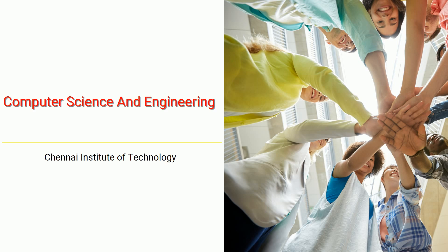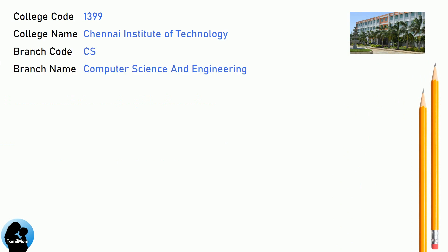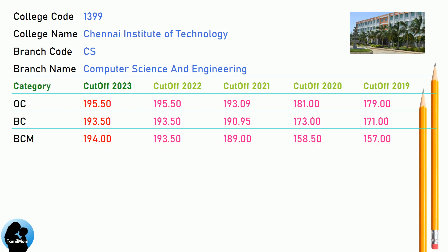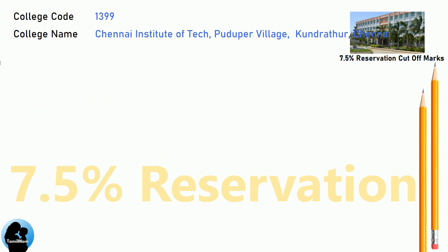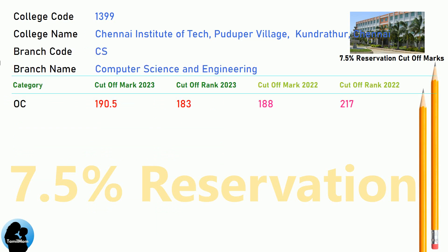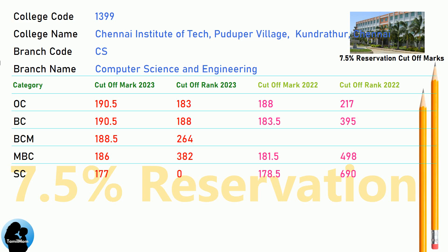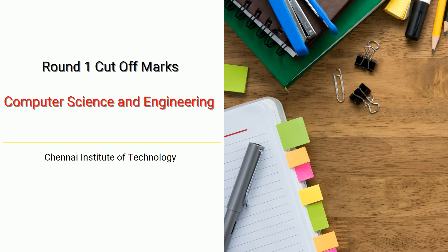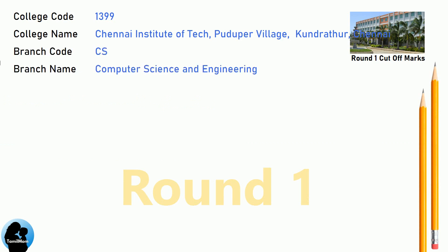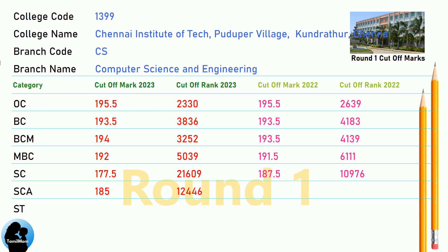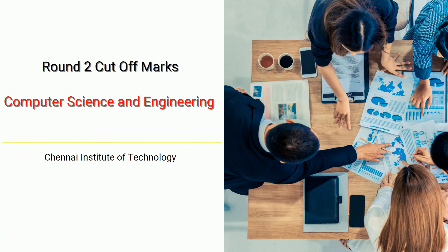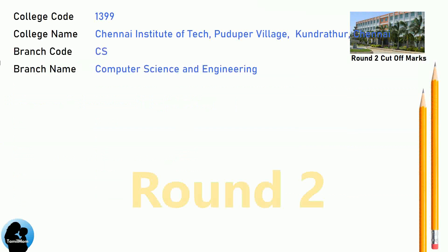DNA Cut-off for Chennai Institute of Technology in Computer Science and Engineering. DNA 7.5 Reservation Cut-off for Chennai Institute of Technology in Computer Science and Engineering. DNA 8.5 Reservation Cut-off for Chennai Institute of Technology in Computer Science and Engineering. DNA Round 1 Cut-off for Chennai Institute of Technology in Computer Science and Engineering.